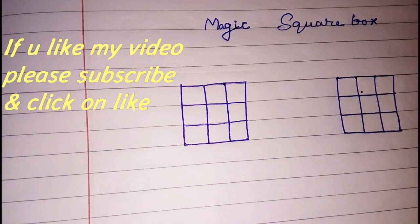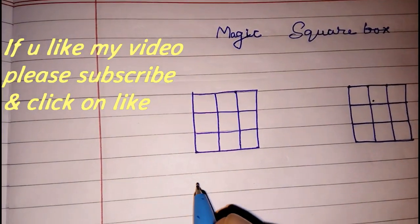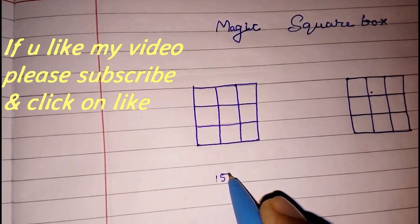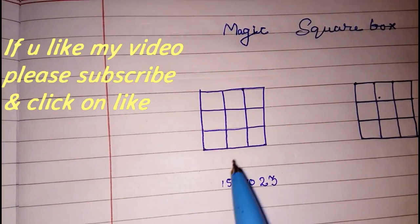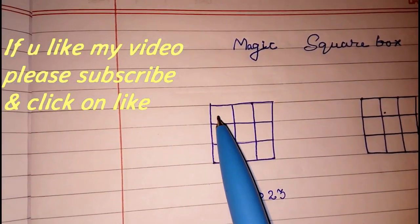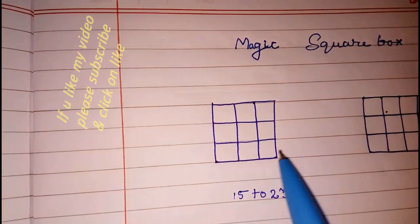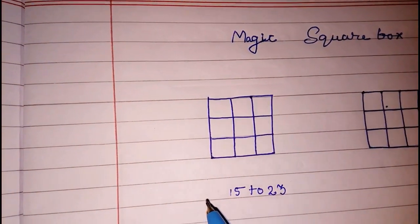So we are going to use 15 to 23, arrange 15 to 23 in this box such that we get sum of numbers horizontally, vertically or diagonally equal.